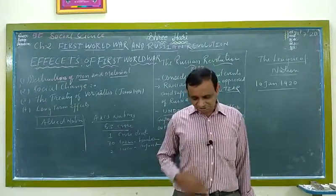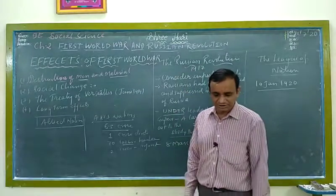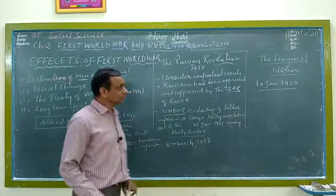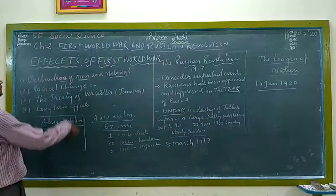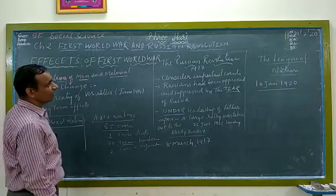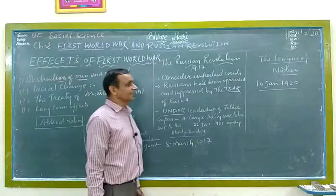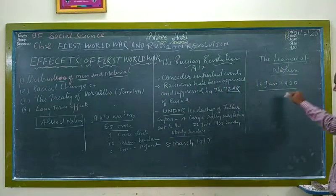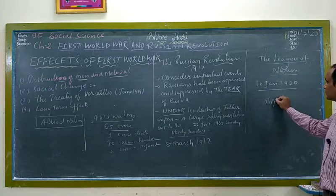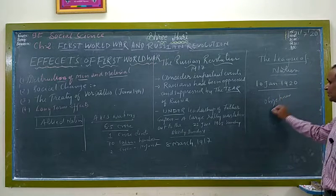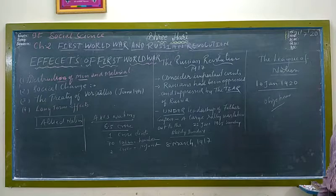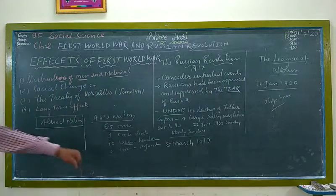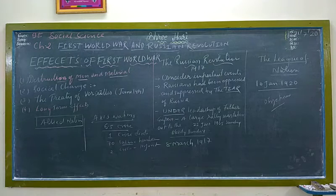And in this way, dear students, we finish Chapter Number 2. The topics we studied today were the effects of the First World War, the Russian Revolution, and the League of Nations — including when it was established, what its main objectives were, and why it was formed. Jai Shri Swaminarayan. Write the questions and answers of this chapter.